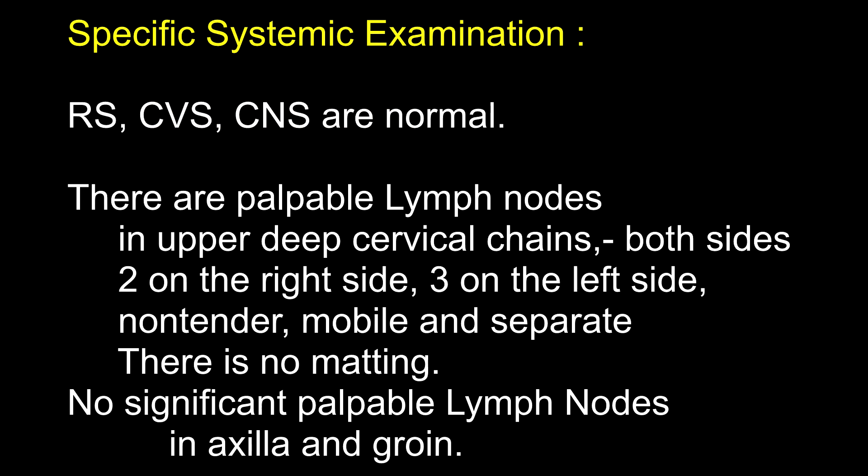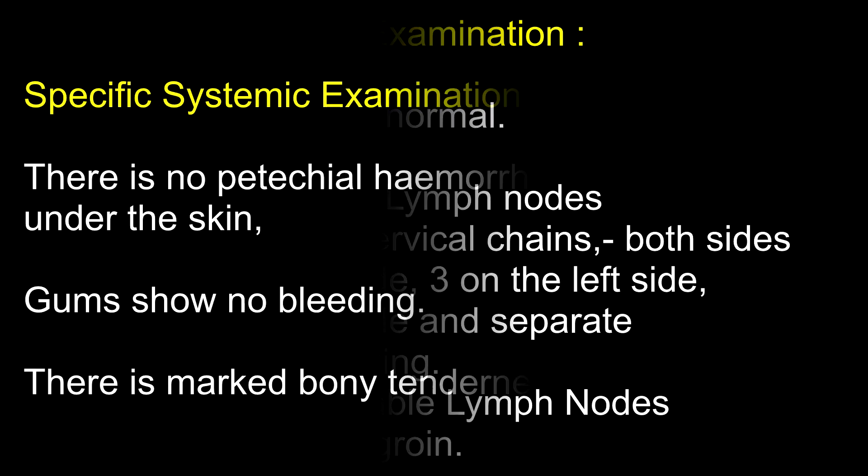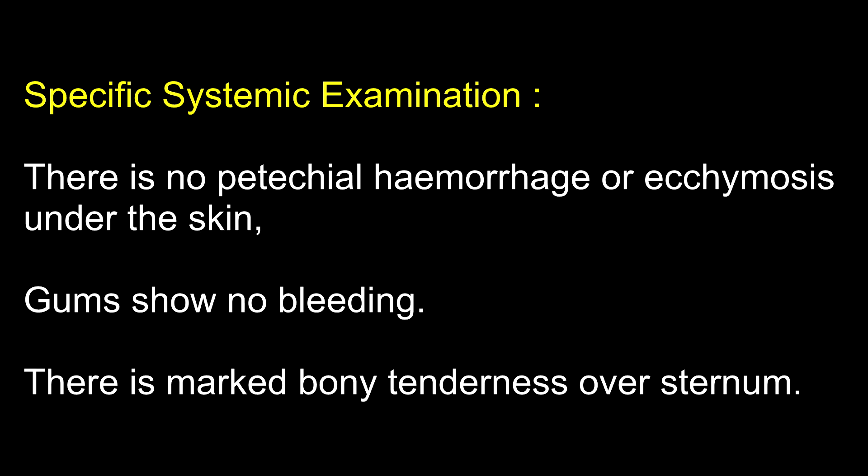On specific systemic examination, the respiratory system is normal. Cardiovascular system is normal. CNS is normal. There are palpable lymph nodes in the upper deep cervical chains on both sides — two on the right side, three on the left side. They are non-tender, mobile and separate. There is no matting. No significant palpable lymph nodes in the axilla or groin. There is no petechial hemorrhage or ecchymosis under the skin.